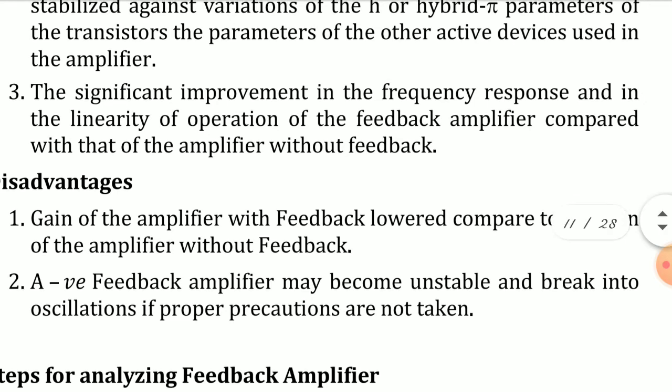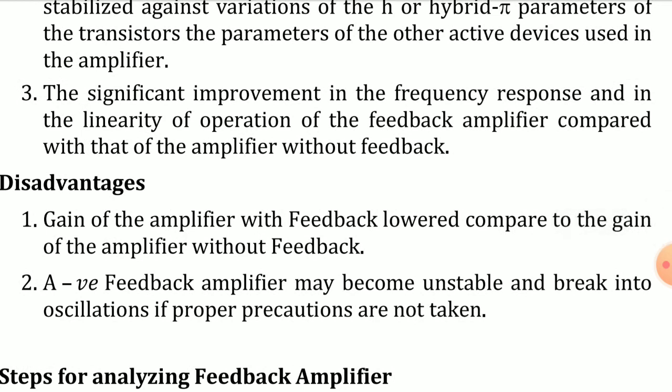A second disadvantage is that a negative feedback amplifier can become unstable and break into oscillations if proper precautions are not taken. This happens because negative feedback requires the input and feedback signals to be out of phase. If the phase shift increases beyond 270 degrees, it approaches 360 degrees, and the negative feedback turns into positive feedback — causing the amplifier circuit to turn into an oscillator.